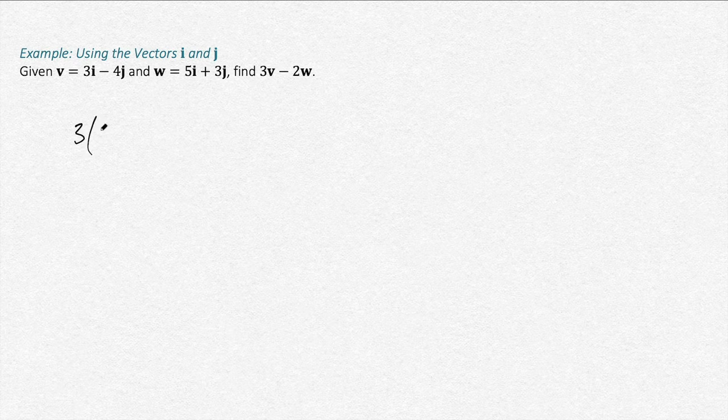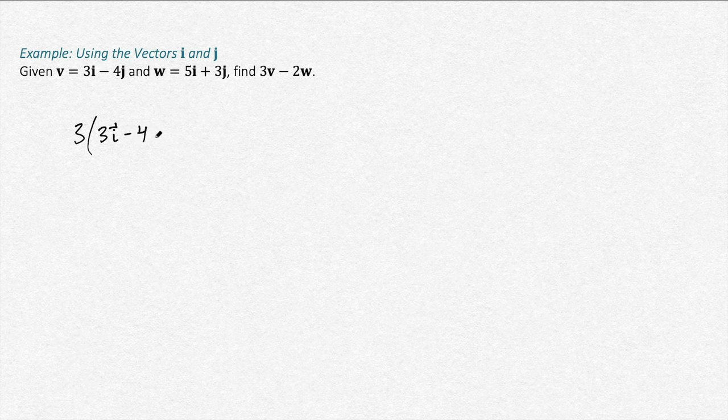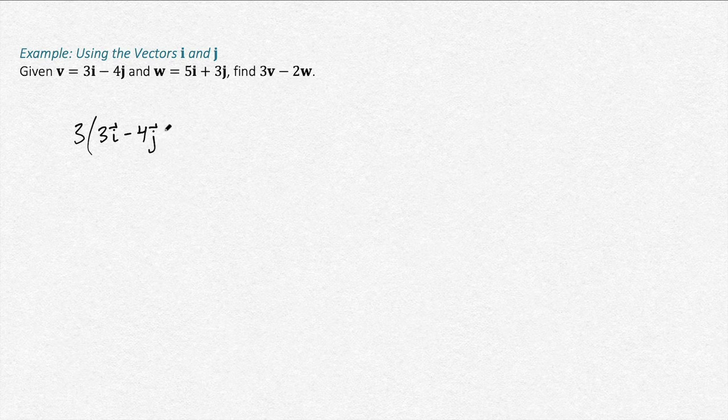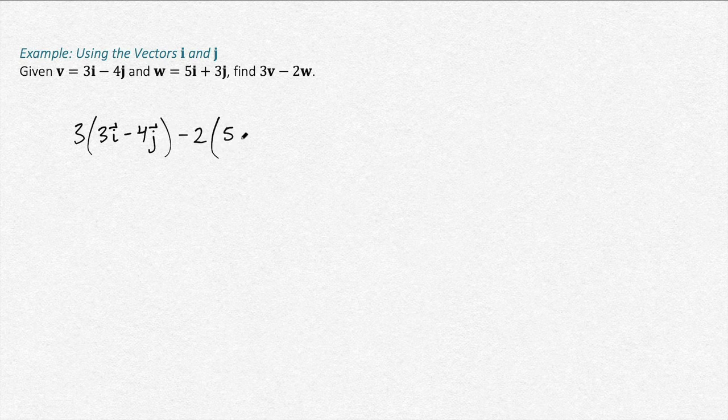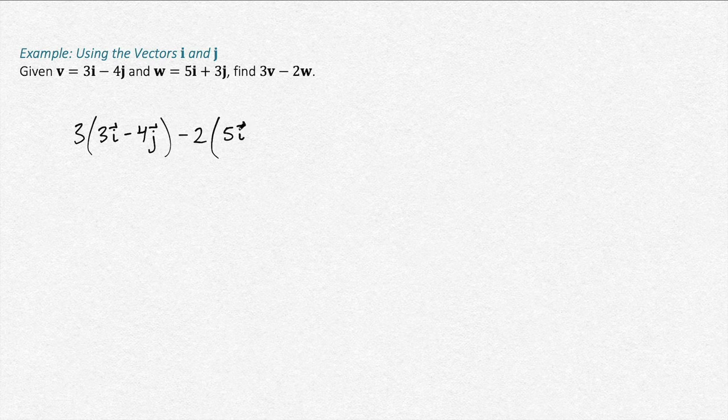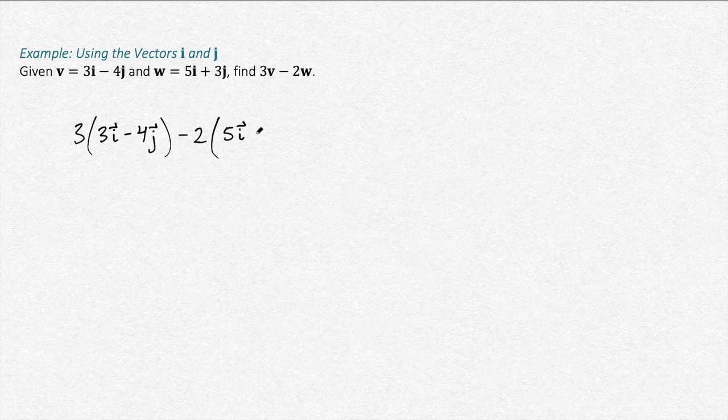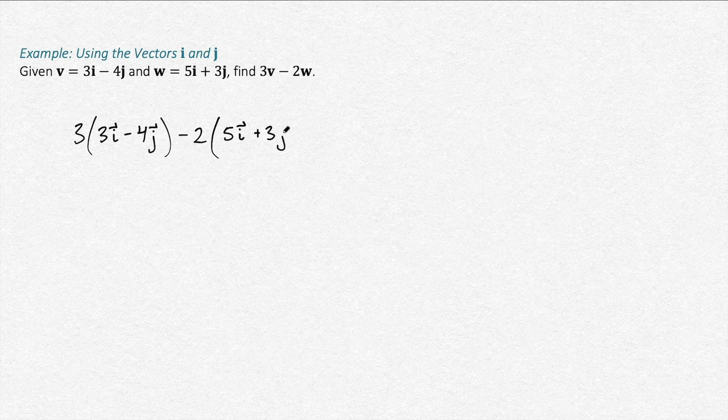So 3v is 3 times 3i minus 4j, and then minus 2 times w, which is 5i. Sorry, that hat notation is used in many different applications. And then plus 3j.